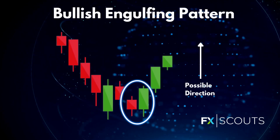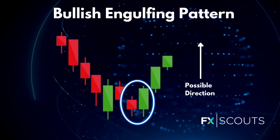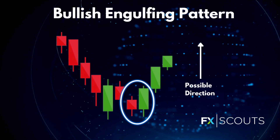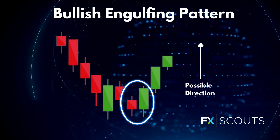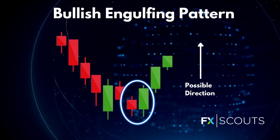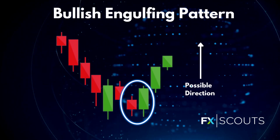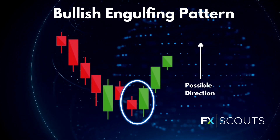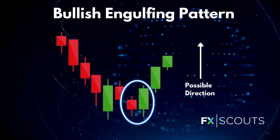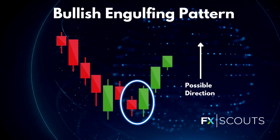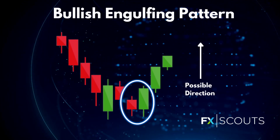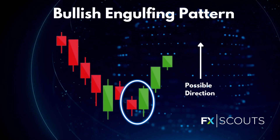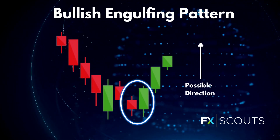Next you get the bullish engulfing pattern and it is formed by two candlesticks. The first candlestick, as you can see here, is a short red body that is completely engulfed by a larger green candle. Though the second one opens lower than the first, the bullish market pushes the price up, which culminates in an obvious win for buyers.